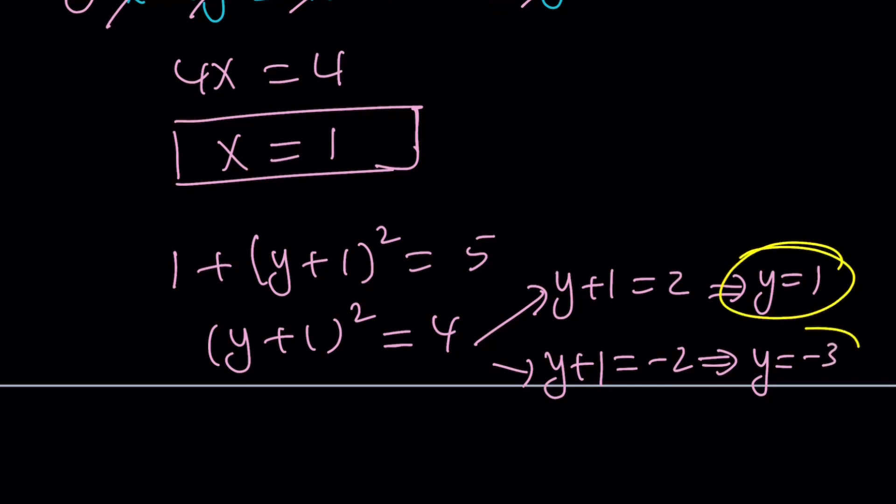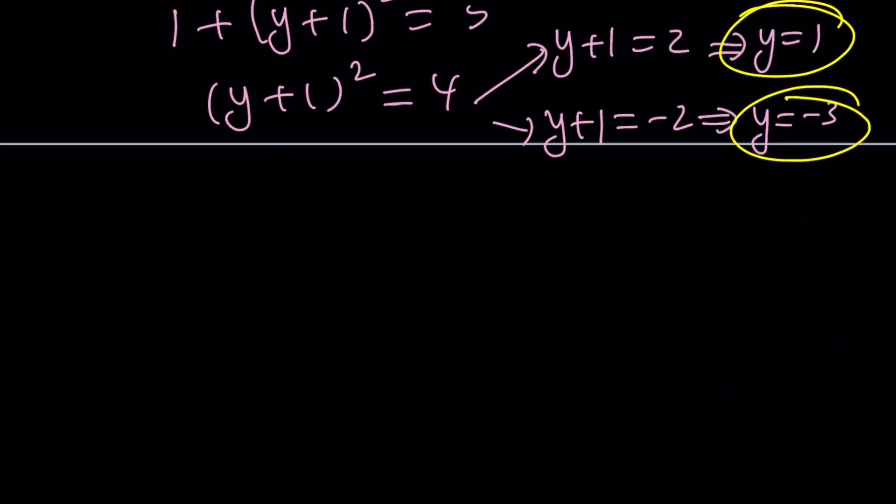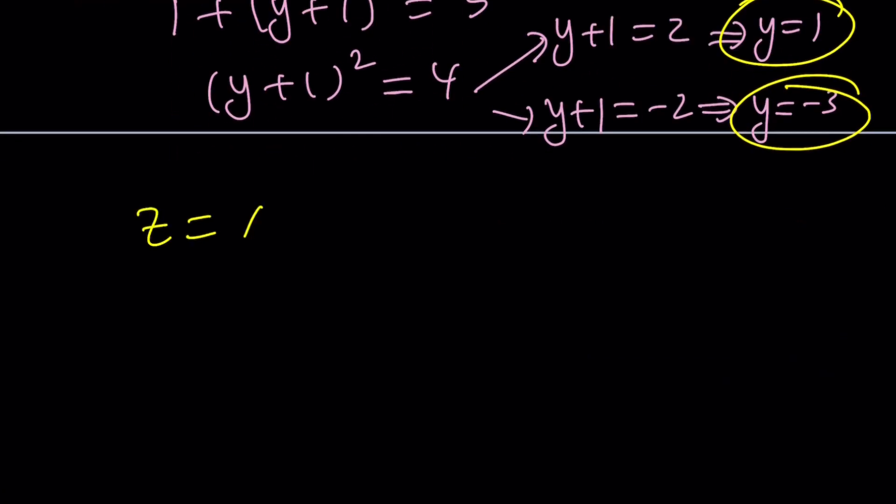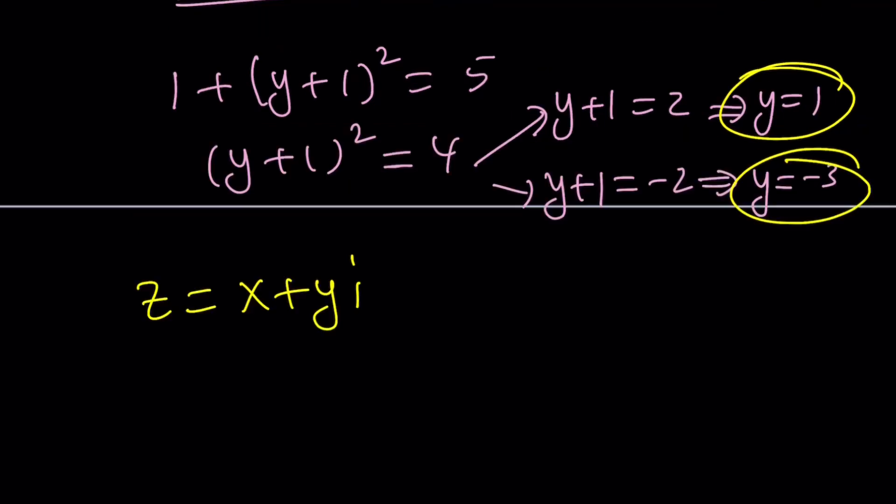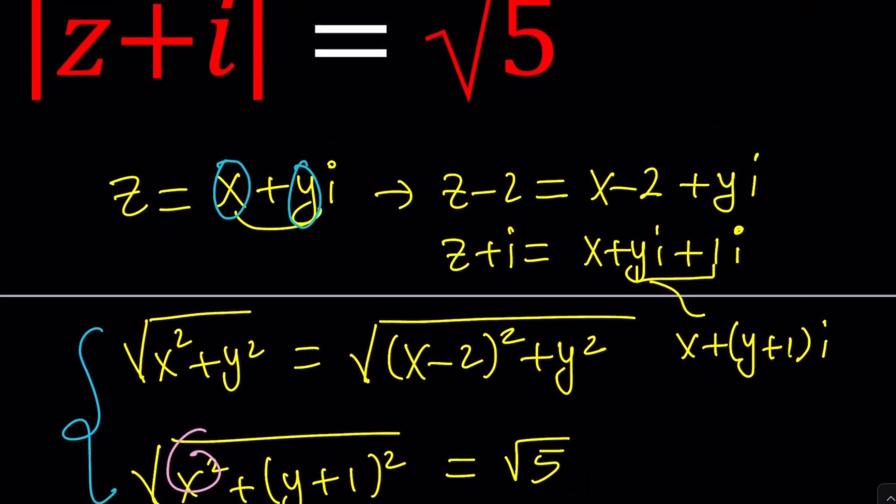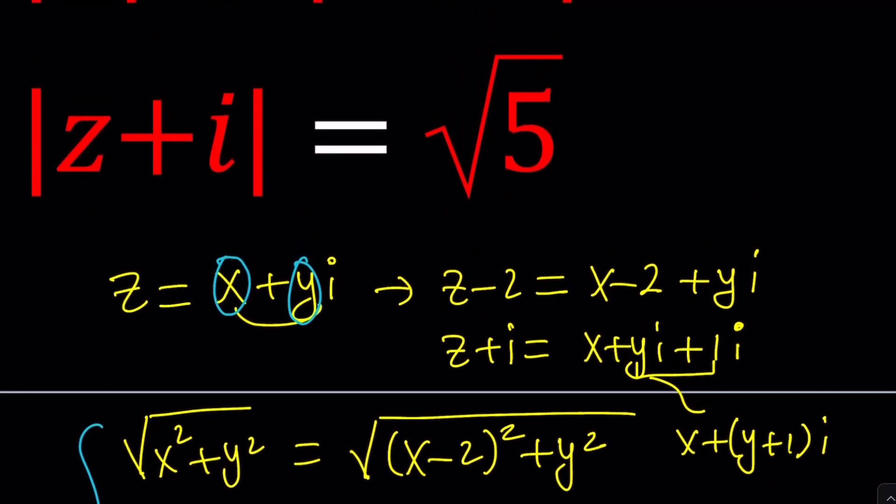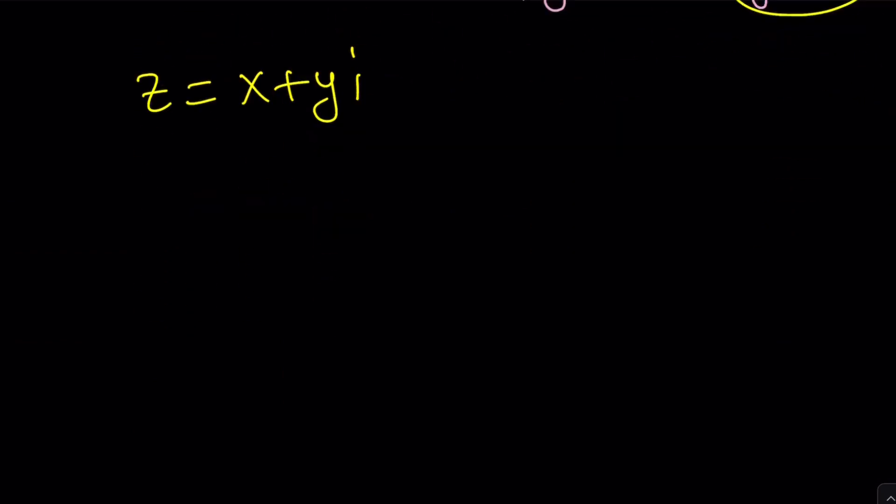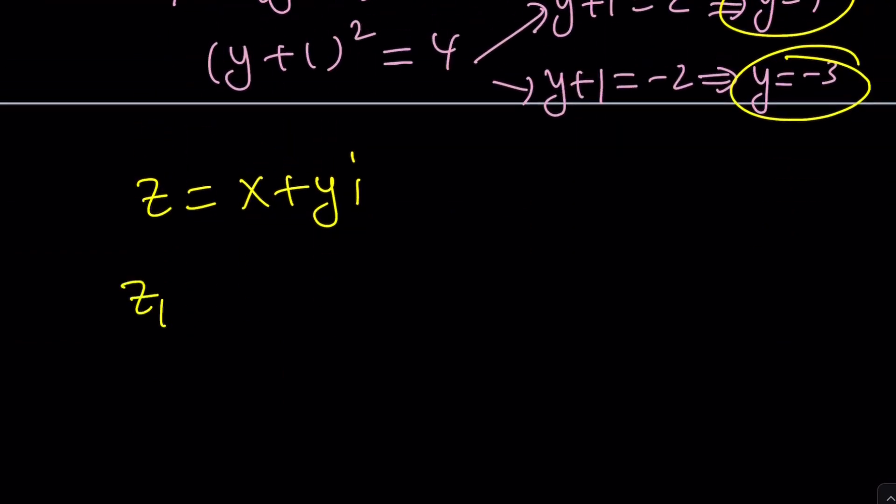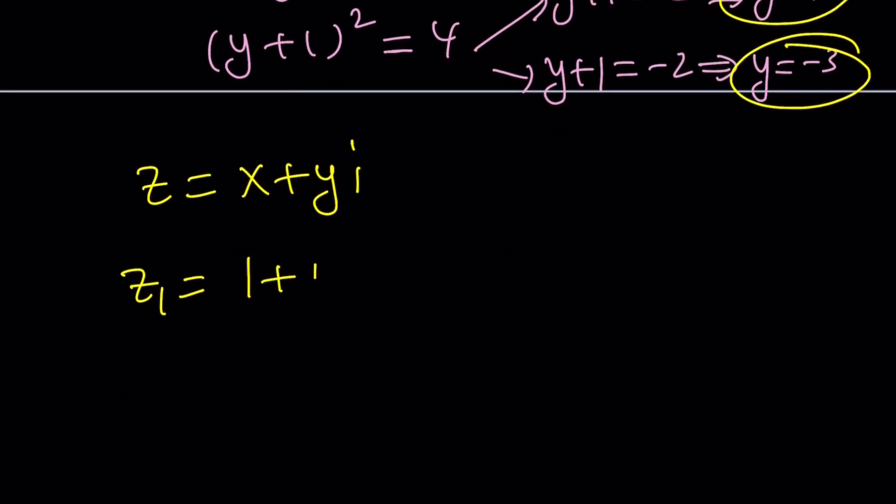Awesome. We're going to see this on the graph. So what does that mean? I got two y values for a single x value, and remember, z was written as x plus yi. This means we have two solutions. If you go back to the original, we're supposed to have two solutions because z is x plus yi. Let's write them down. z sub 1, one of the solutions is going to be x, which is 1, plus 1i, and the other one is just going to be 1 minus 3i.